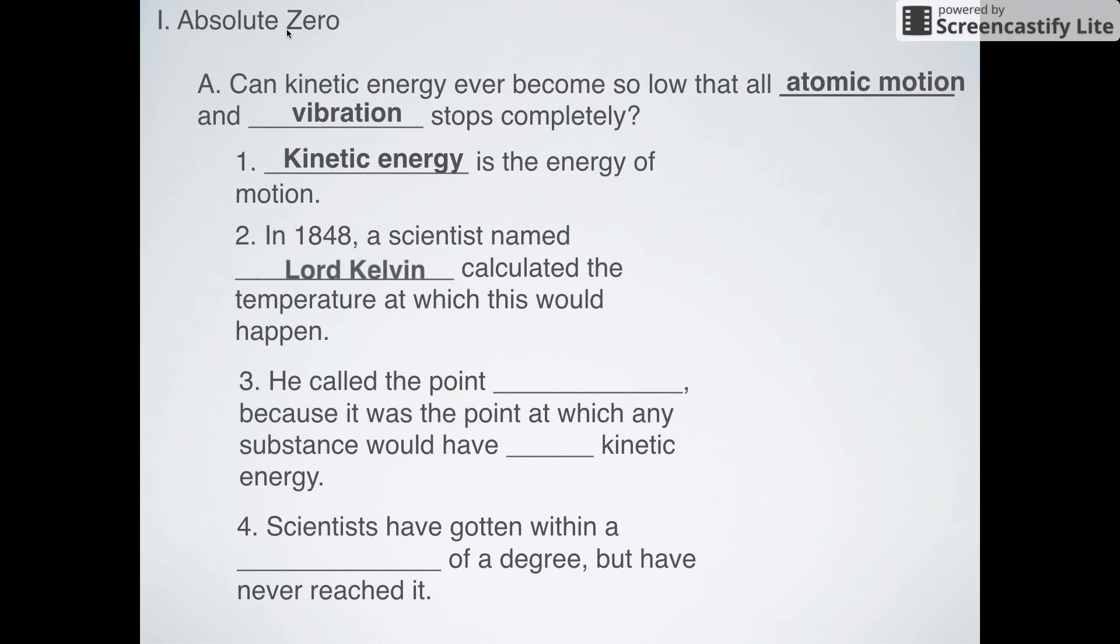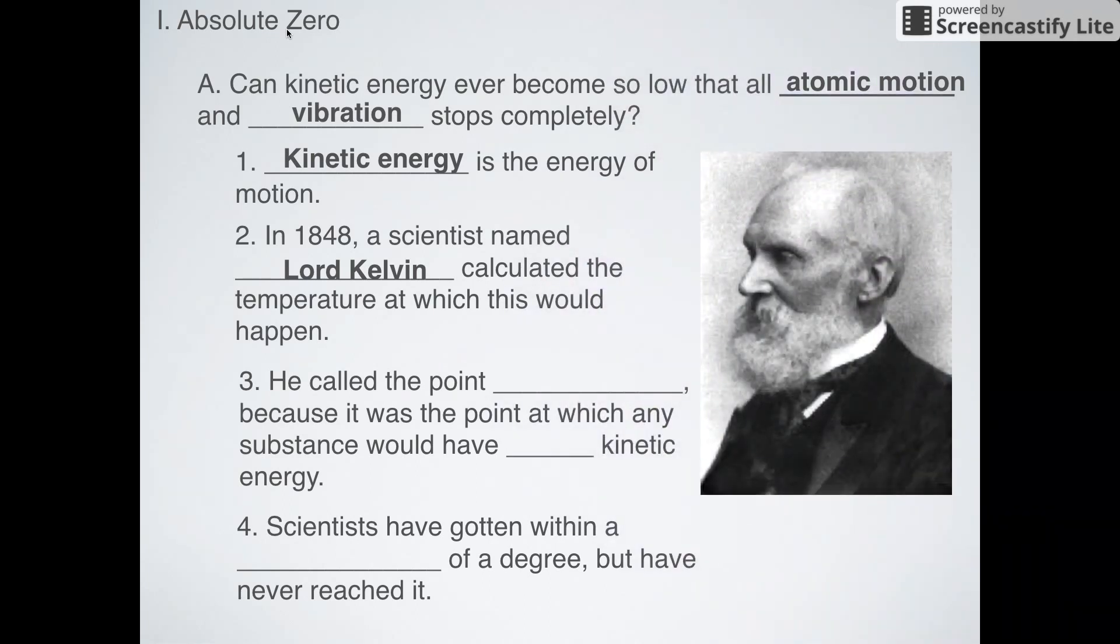Now a scientist in about 1848 named Lord Kelvin calculated the temperature hypothetically at which all motion and vibration would stop. He looks like anybody else from the 1800s with a nice little white beard. So what did he call this point? He called this hypothetical point Absolute Zero.